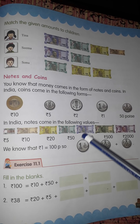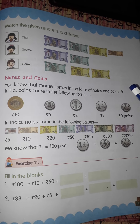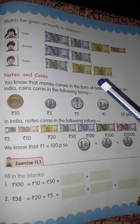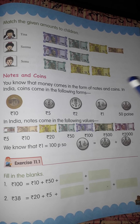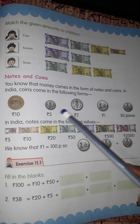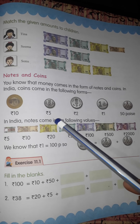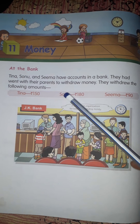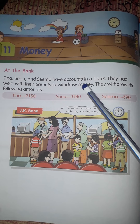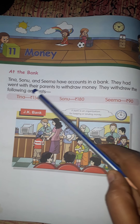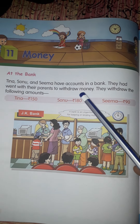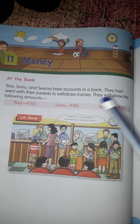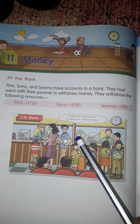So these are the notes and these are the coins. Students, we need money because we have to purchase many kinds of things. Now, start at the bank: Tina, Sonu, and Seema have accounts in a bank. They went with their parents to withdraw money and withdrew the following amounts.